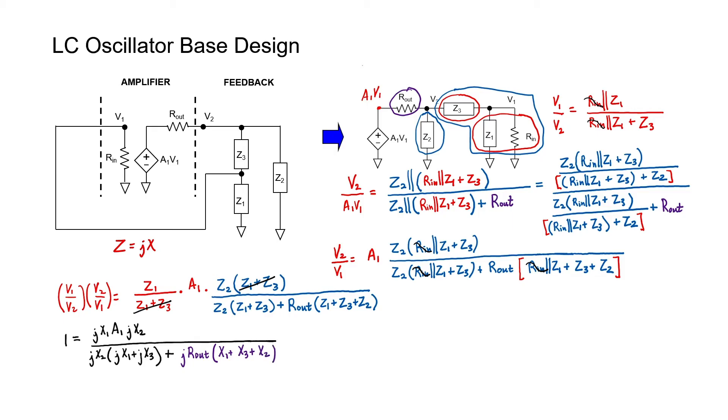J squared is negative one, so the numerator is a real number. This term has two J squareds, so this is also a real number. Because the ratio is a real number, it means that this imaginary number has to be zero. Therefore the sum of the three reactive elements in this circuit must be zero.